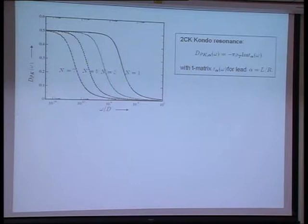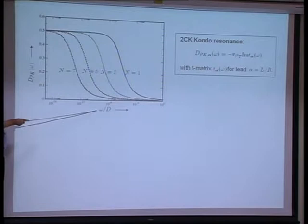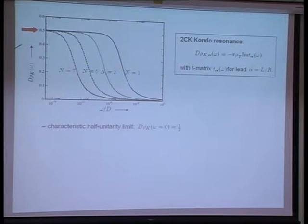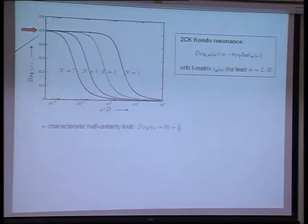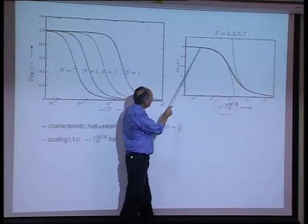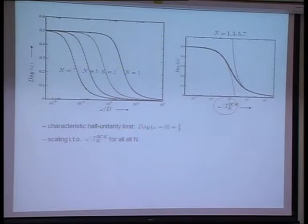The two-channel Kondo resonance — embodied in the imaginary part of the scattering T-matrix for lead alpha — is shown as a function of frequency relative to the Fermi level over T equals zero, on a log scale in units of bandwidth D, for chains of different lengths: one, three, five, and seven. One has a characteristic so-called half-unitarity limit to the Kondo resonance — it's one-half here; a unitarity limit would be one. That's a characteristic of the two-channel Kondo fixed point.